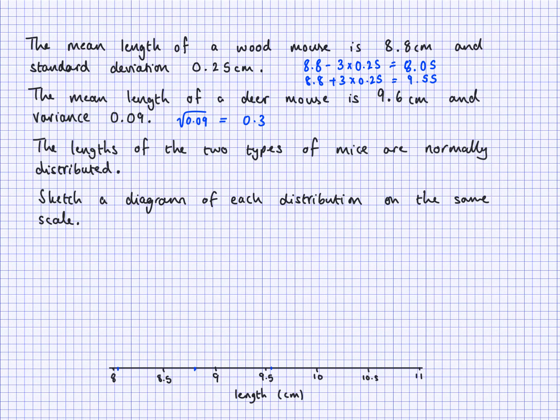So I'll use a different color now. So this time I'm interested in 9.6 take away 3 times 0.3. That's going to be 8.7. And I'm also interested in 9.6 plus 3 times 0.3. That will be 10.5. So 8.7, which is about here. The mean is 9.6, which is there. And the other point is 10.5, which is here.